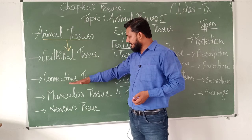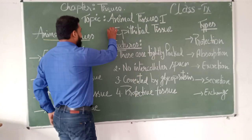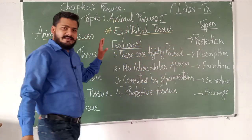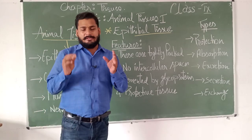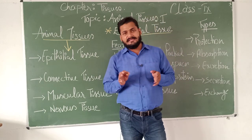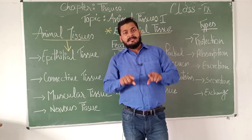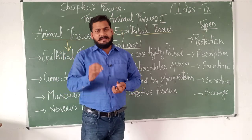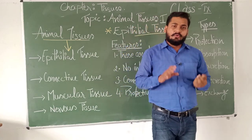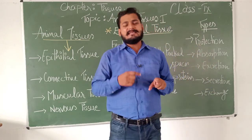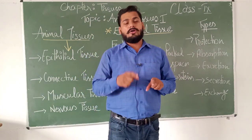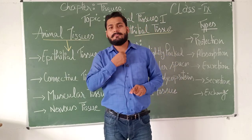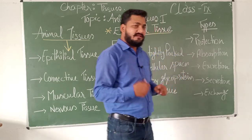Starting with epithelial tissue: epithelial tissues are basically protective in nature. Most of the time, epithelial tissues are present over different organs — they form the outer covering of our organs. They are present over our lungs, kidneys, and nose. They do the function of protection of organs and cavities. The word cavity means hollow spaces, such as the buccal cavity, which is the hollow space inside the mouth, and the food pipe.